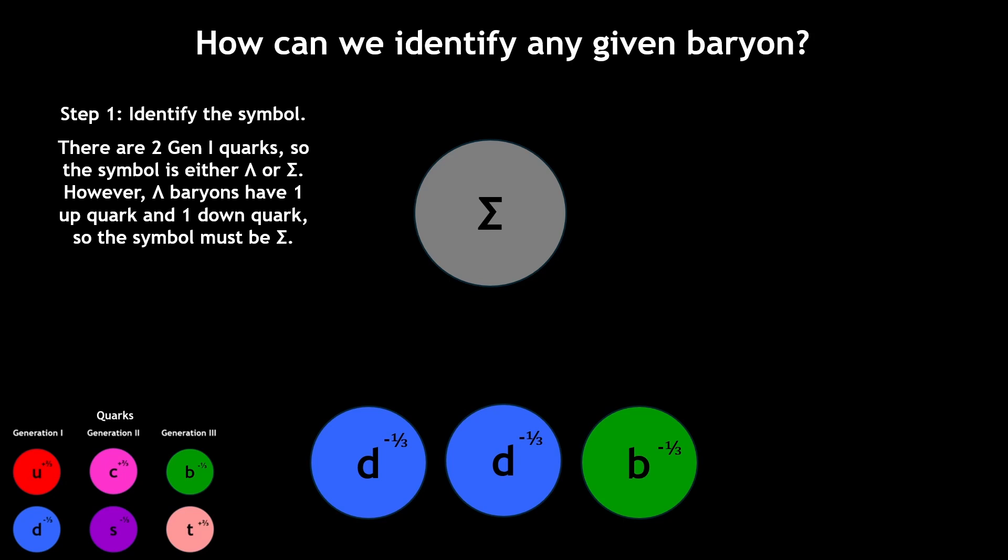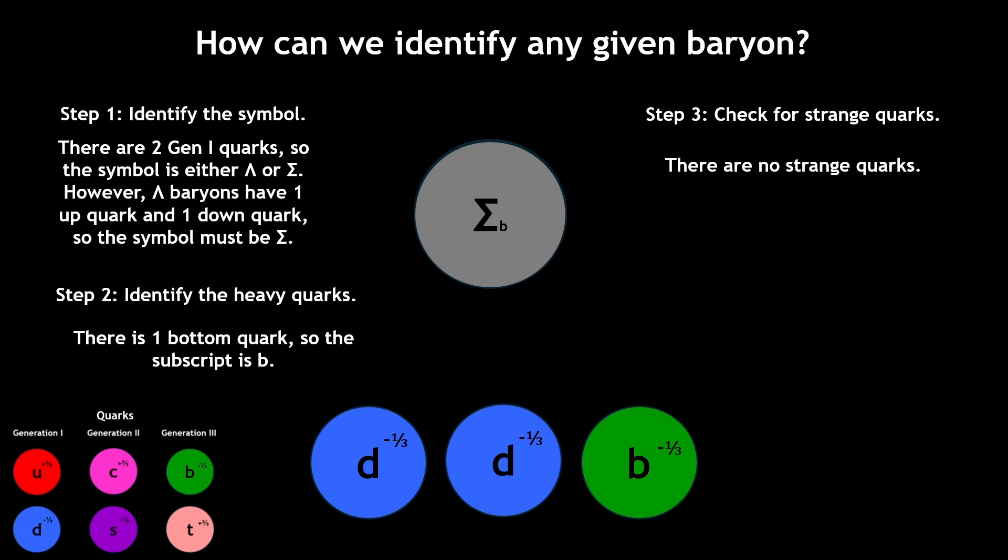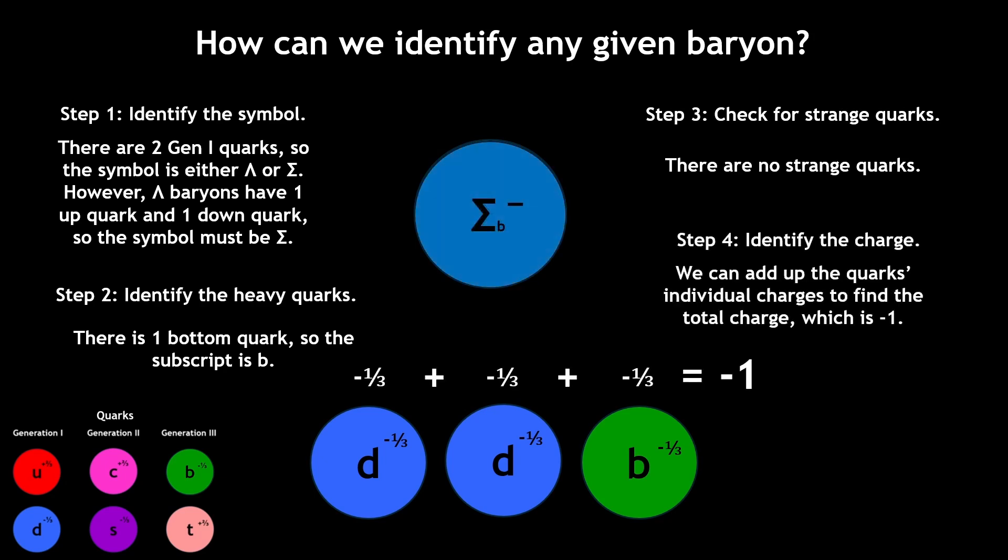Next, this baryon has one bottom quark, meaning the subscript will be b. There are no strange quarks in this baryon. Lastly, we can find the total charge by adding up the individual quark charges, and so this baryon has a minus 1 charge.